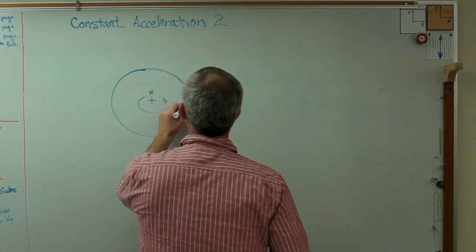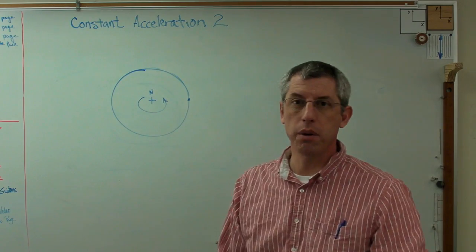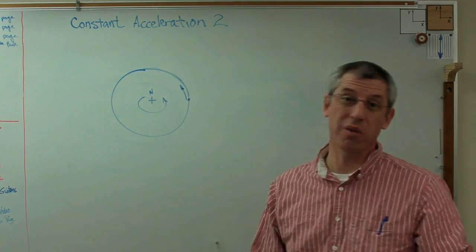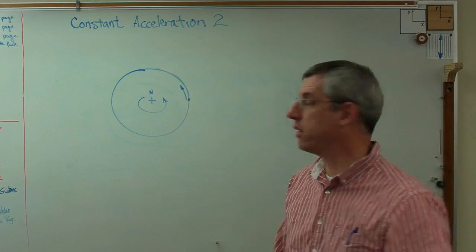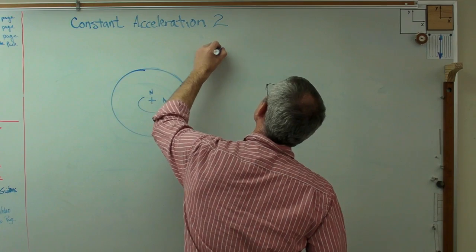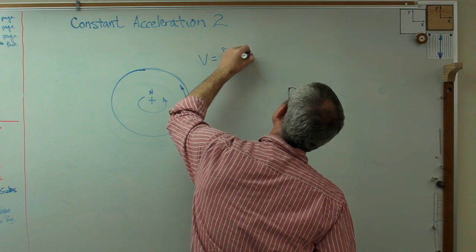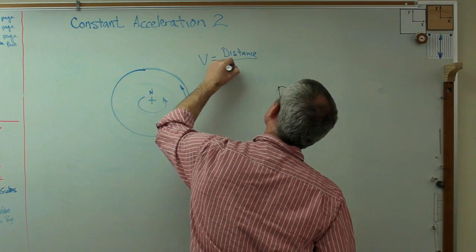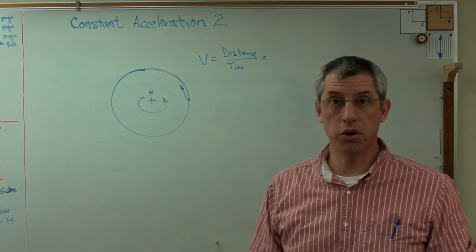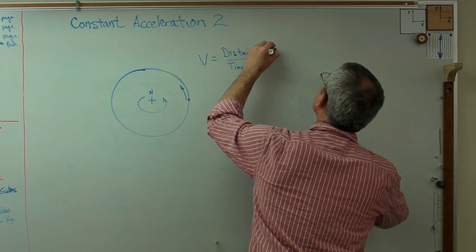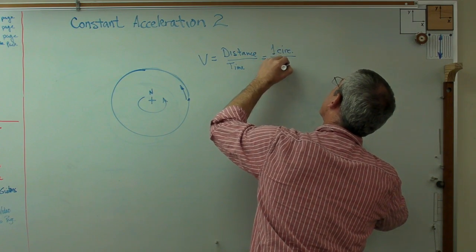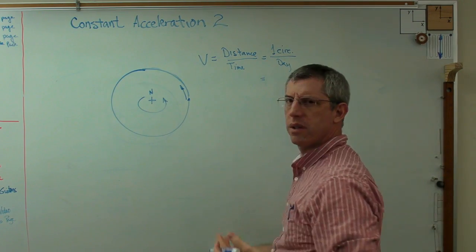How fast am I moving? Let's say you started right out here at the equator. How fast would I be moving if I was standing at the equator? Not moving with respect to the Earth, but moving with respect to the rest of the universe. Velocity is distance over time, distance per unit time. I'm going to move one Earth circumference per day.